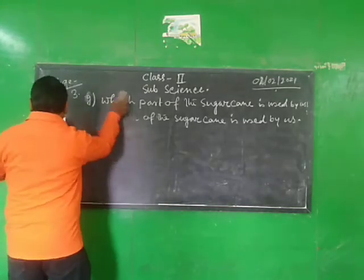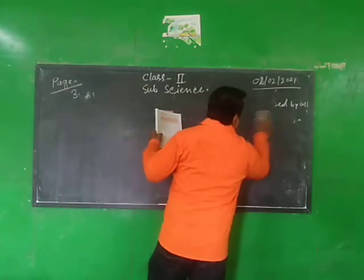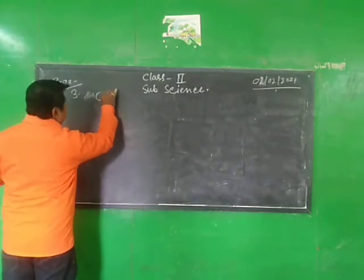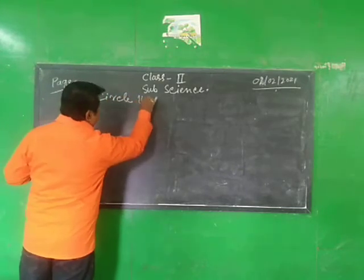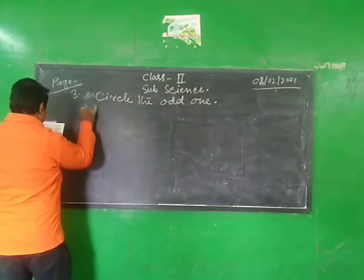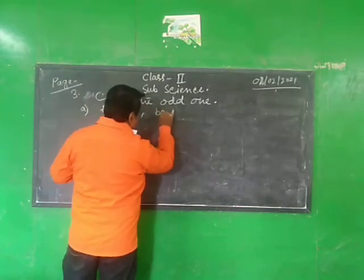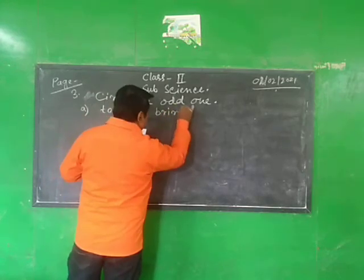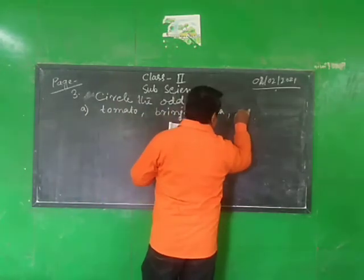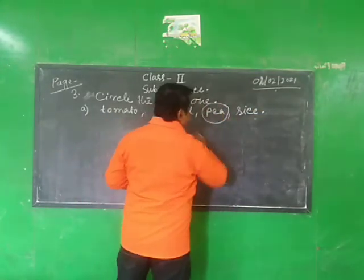Take a strike of the odd one out. Circle the odd word. Number 1: tomato, green gel, pea, rice. So we circle pea, because it is a flavor.